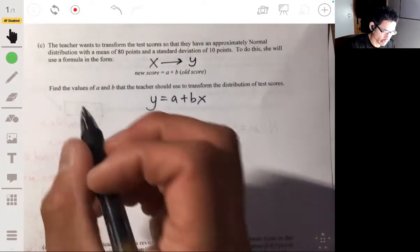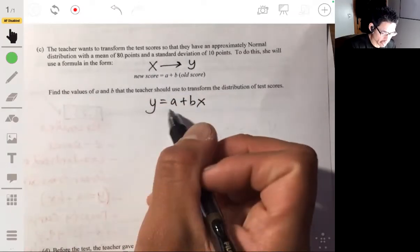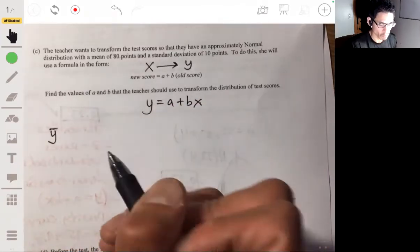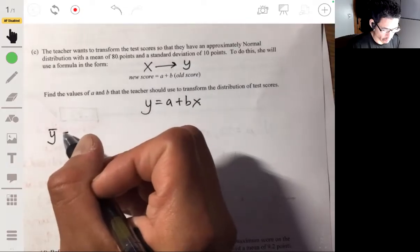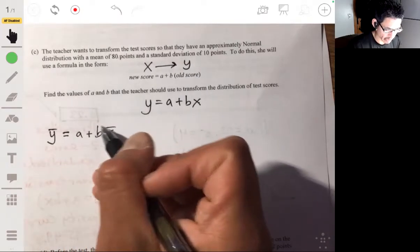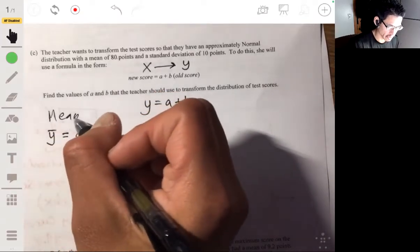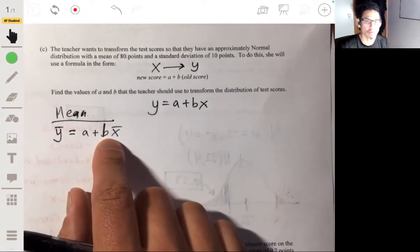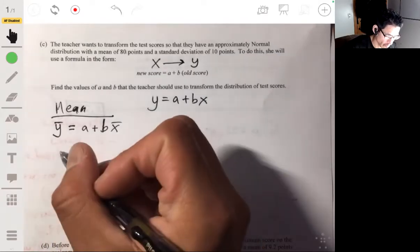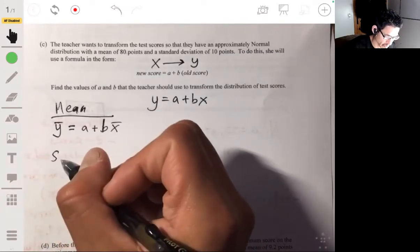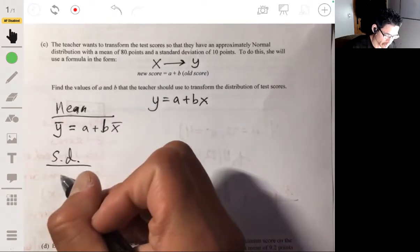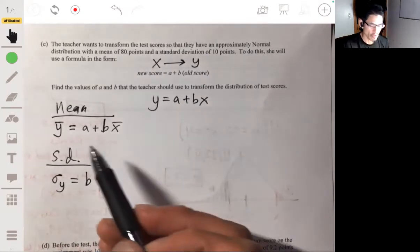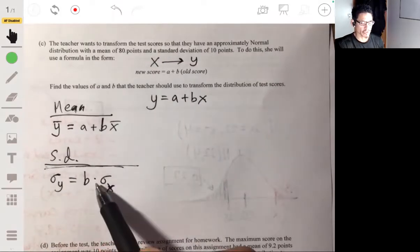Before that, we need to know that when we transform means, the mean of y will be equal to a plus b times the mean of x. This is for the means - when you're transforming means, you're going to need to add and multiply, scalar addition and scalar multiplication. For measures of spread, for standard deviation, the standard deviation of y will simply be b times the standard deviation of x. For measures of spread, you only have to multiply by b.